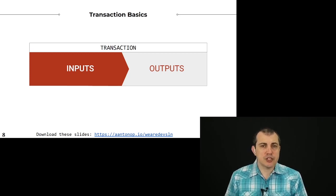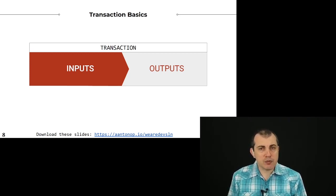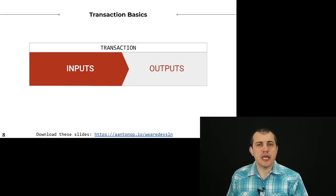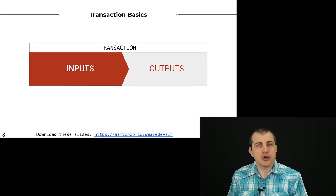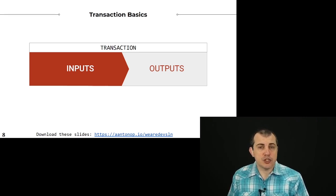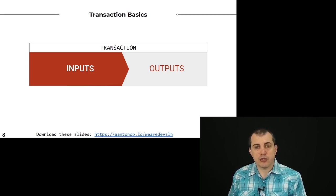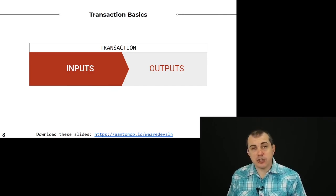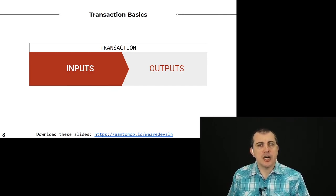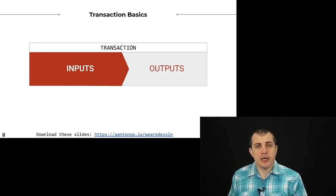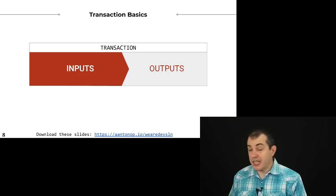When you construct outputs in a Bitcoin transaction, those later become inputs for a future transaction, chaining them all together. In your outputs, you specify the conditions required to spend that output. An important consideration is that any output available to spend must be spent in its entirety — you can't spend half of it. So if the input you have is larger than the payment you want to make, you create change by having an additional output in the transaction that returns money to your own wallet or address.